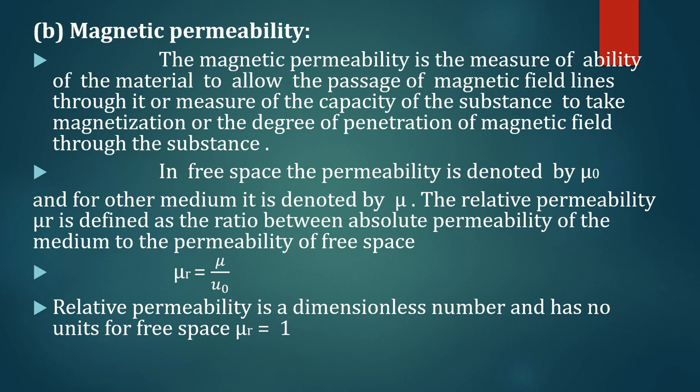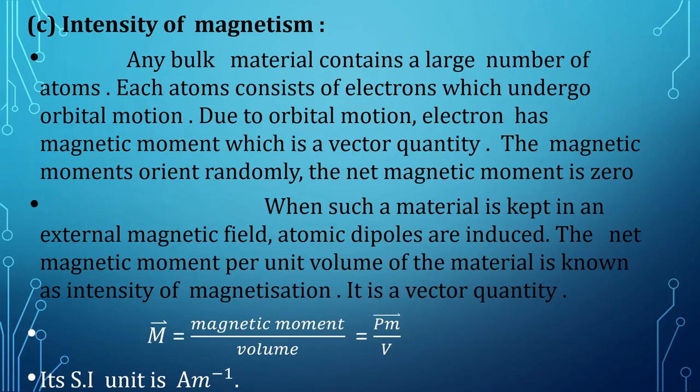For other media, permeability is denoted by mu, and the relative permeability is denoted by mu_r. The relative permeability is a dimensionless number and has no units. For free space, mu_r is equal to 1.